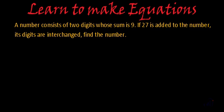So the statement says, a number consists of two digits whose sum is 9. If 27 is added to the number, its digits are interchanged, find the number. So we have to find a two digit number and the sum of those two digits is 9, and when we add 27 to that number itself their digits are interchanged.